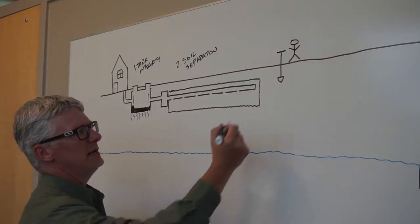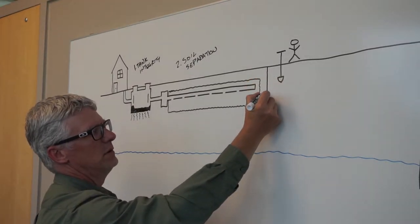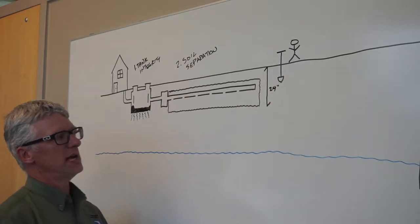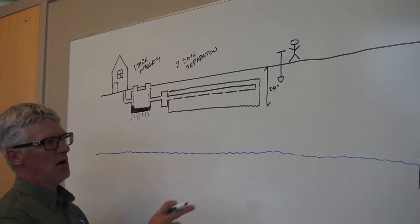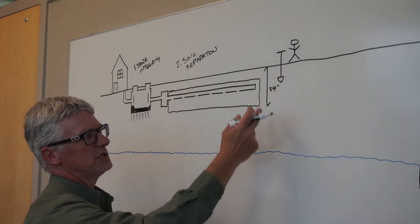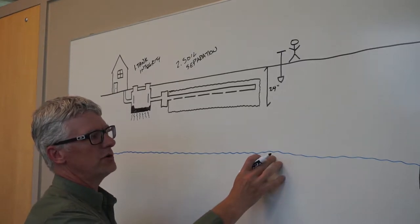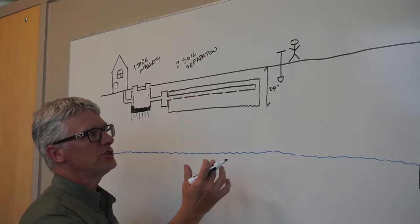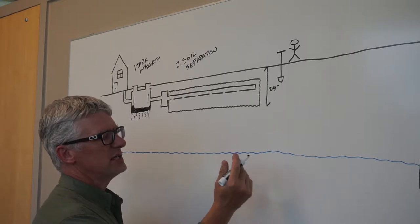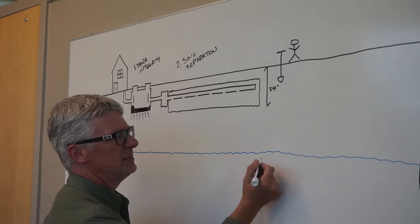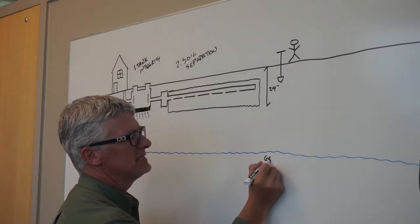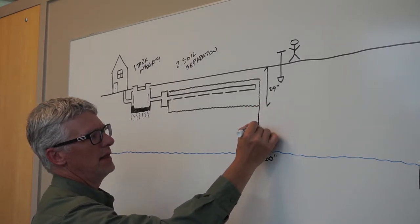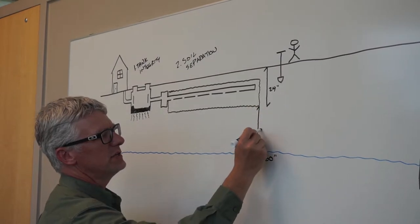Let's imagine for a second that this system, this drain field, was installed 24 inches below the surface. So the depth of the system is 24 inches. Now if the compliance inspector does a soil observation and determines that there's water table due to the presence of soil mottling, which you saw earlier in the video, if he or she sees that, he or she is going to make a depth measurement. And let's imagine for a second that we find water table at 60 inches below grade. Now the distance between the bottom of this system and the water table in this scenario is 36 inches.